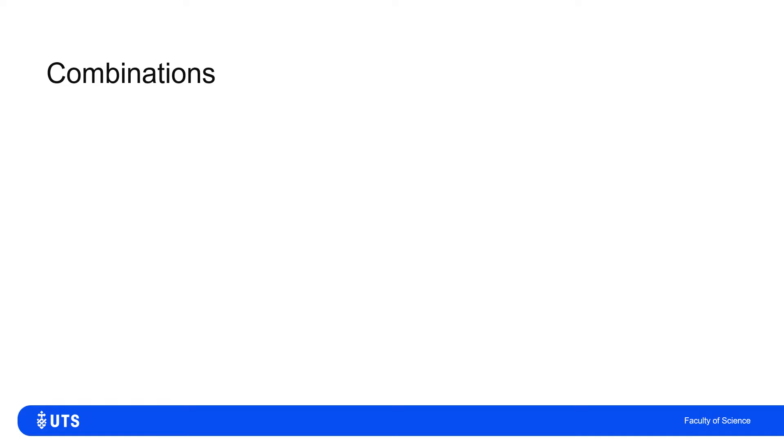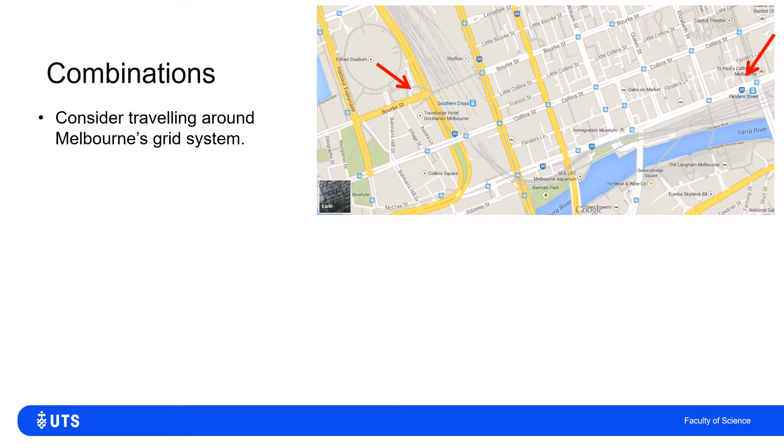Having considered permutations where the order matters, i.e., AB is not the same as BA, we can think instead of combinations. And we'll do this with a very practical example and a very Australian example here.